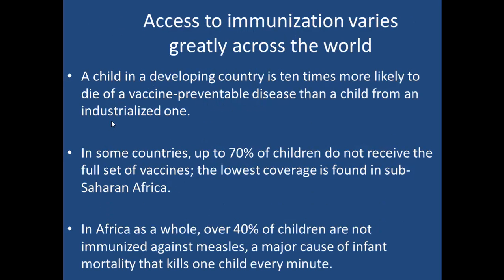Access to immunization varies greatly. A child in a developing country is ten times more likely to die of a vaccine-preventable disease than a child in an industrialized country. In some countries, up to 70% of the population do not receive the full set of vaccines, with the lowest coverage in Sub-Saharan Africa. In Africa as a whole, over 40% of children are not immunized against measles — a major cause of infant mortality that kills one child every minute. The SAGE and WHA resolutions are working to address this equity gap in developing countries.